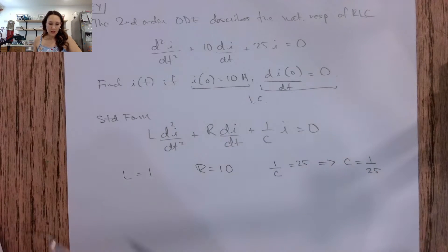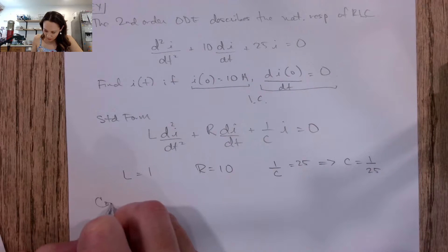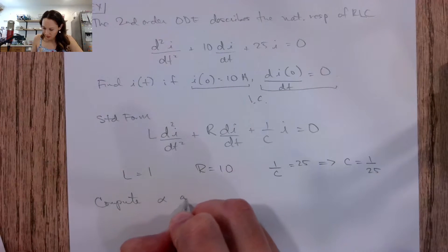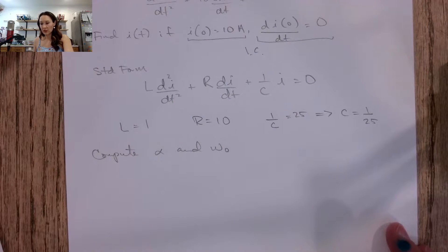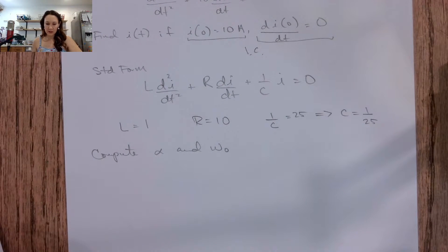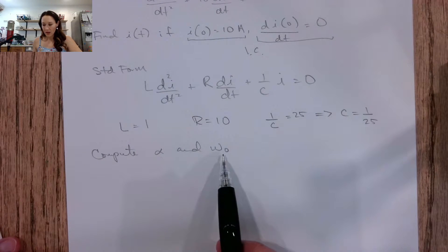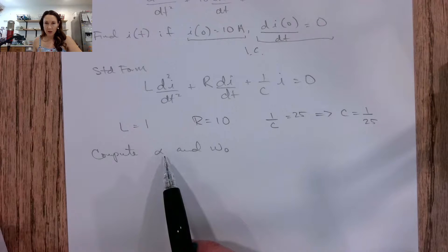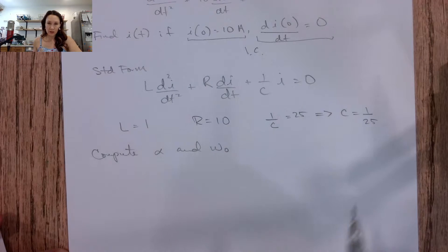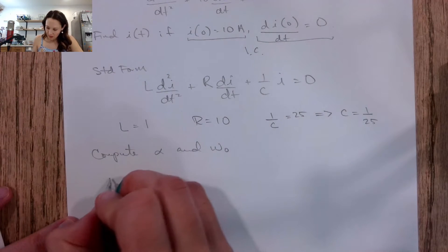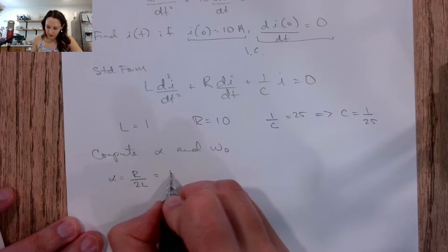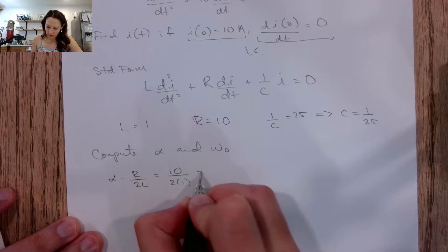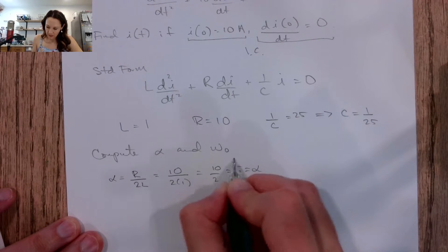Now we have these values. The first thing we do is compute alpha and omega naught, because that tells us which case we fall into — what type of natural response we have depends on how alpha and omega naught relate to each other. The formula for alpha is R over 2L, so that's 10 over 2 times 1, which is 5. So alpha = 5.